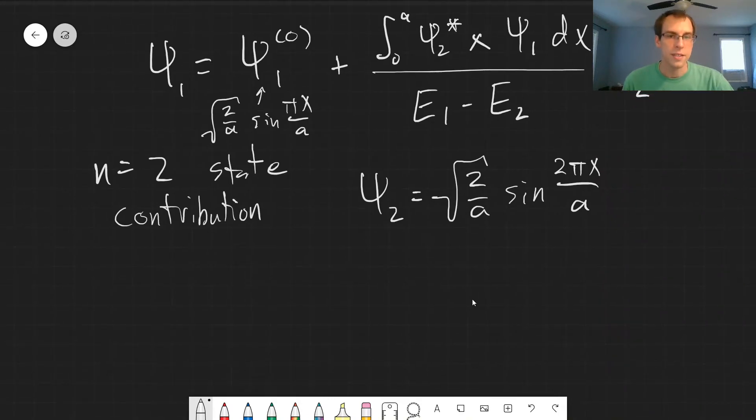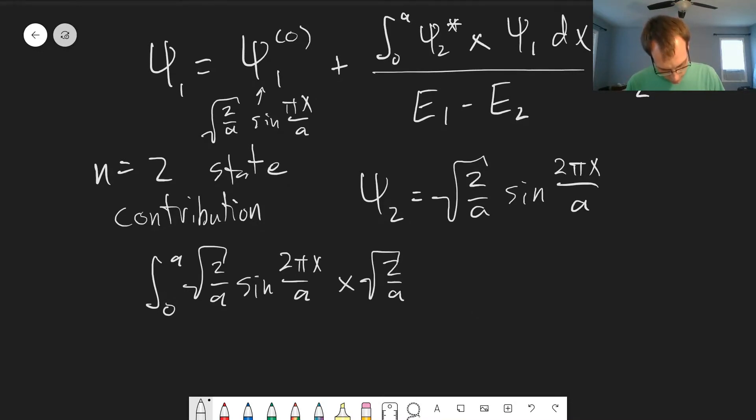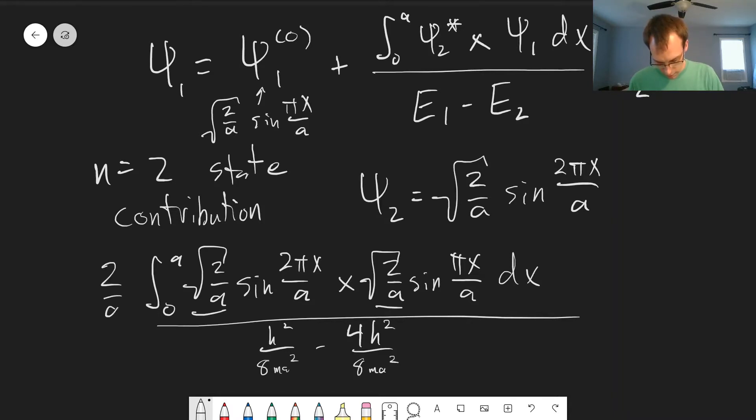So let's go ahead and finish this. We've got our integral from 0 to a, root 2 over a sine 2πx over a times root 2 over a sine πx over a dx, divided by E1 which is h² over 8ma² minus 4h² over 8ma². So let's do this integral on the top and we can factor out the square root of 2 over a's, so that would just be 2 over a out here.